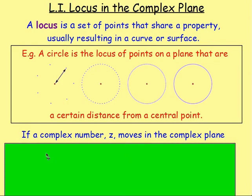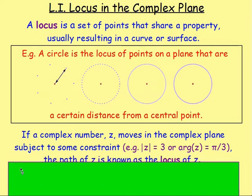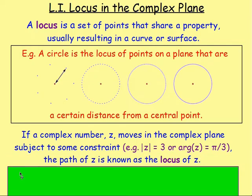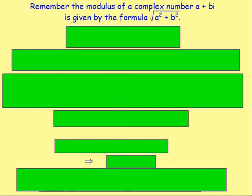With complex numbers, if a complex number z moves in the complex plane subject to some constraints — such that the modulus of z is always going to be 3, or the argument of z might be, for example, pi over 3 — then the path of z is known as the locus of z. The equation of the locus can be found as follows, which I will demonstrate with five examples.